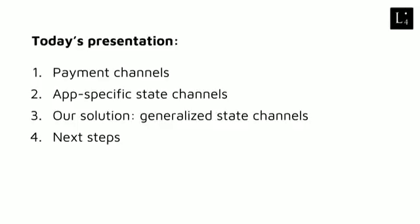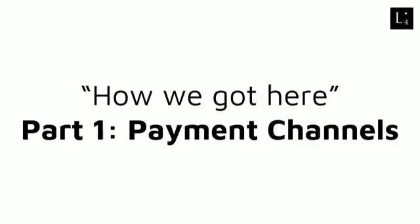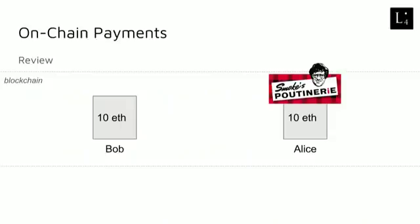One of the original use cases for blockchain technology is cryptocurrencies or value transfers between people. Let's go through a quick review of how an on-chain value transfer — like an on-chain payment of Ether — looks like. In this scenario we have two people: Bob, a customer, and Alice, a restaurant operator, both of whom have 10 Ether. Bob wants to send one Ether to Alice. First, Bob sends a transaction sending one Ether.